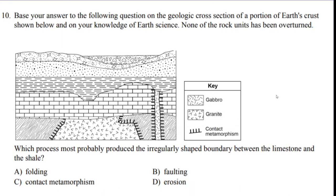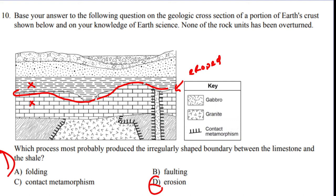Question ten: which process most probably produced the irregular-shaped boundary between the limestone and shale? That irregular boundary is an unconformity — an area that was eroded away, then the shale was deposited on top after the layer was eroded. The answer is D — erosion, forming an unconformity. That concludes the Earth Science review series. Good luck on any tests and the rest of the year!